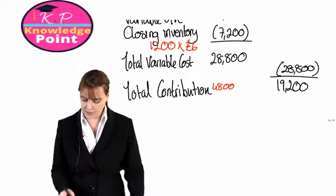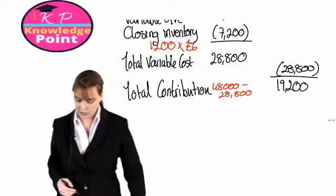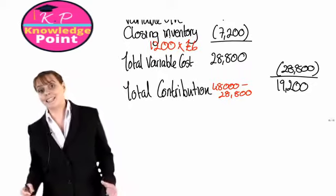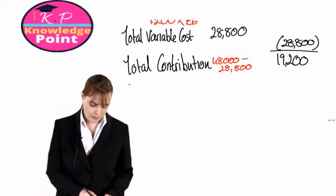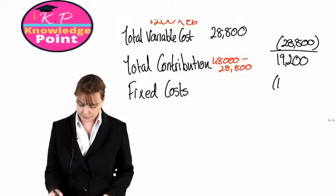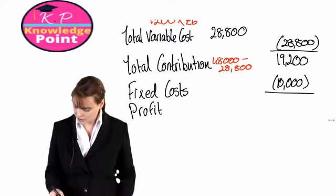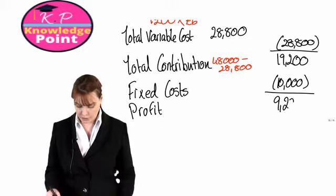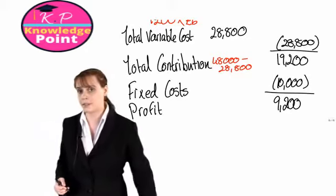We subtract our fixed costs to get our profit. Our marginal costing profit is £9,200.